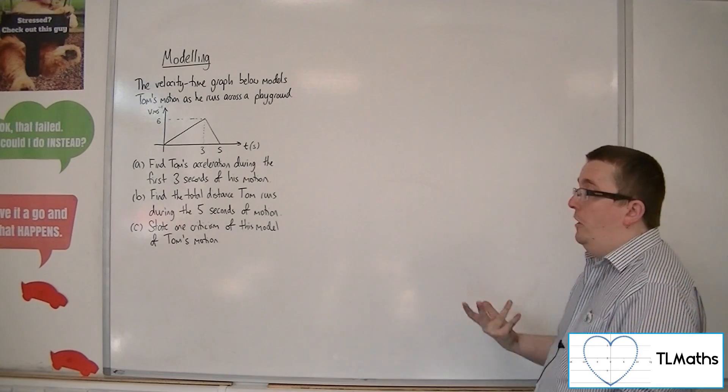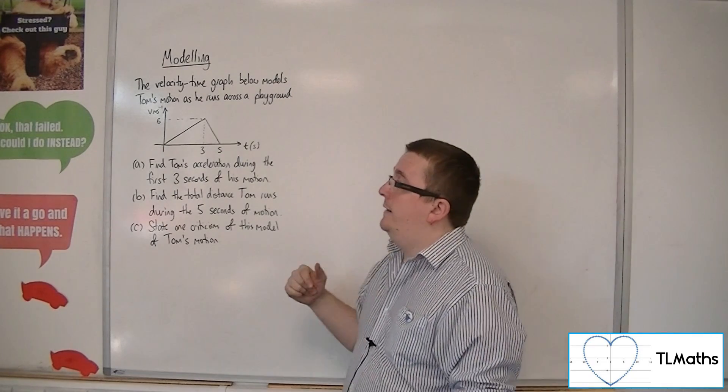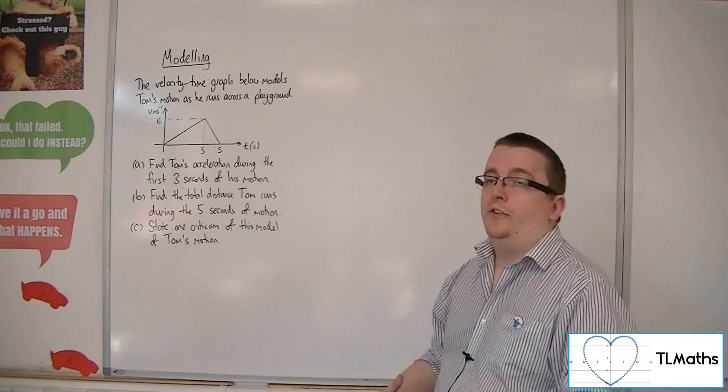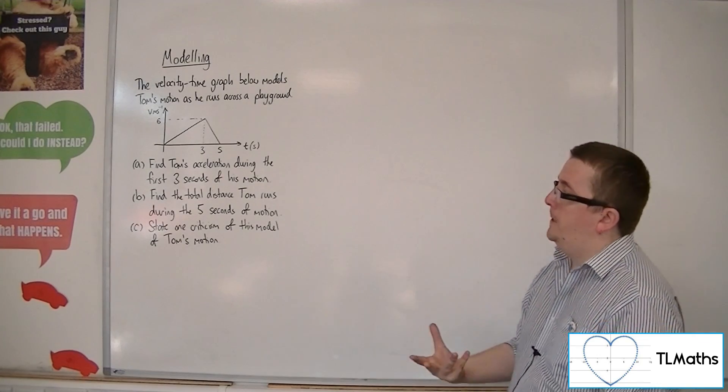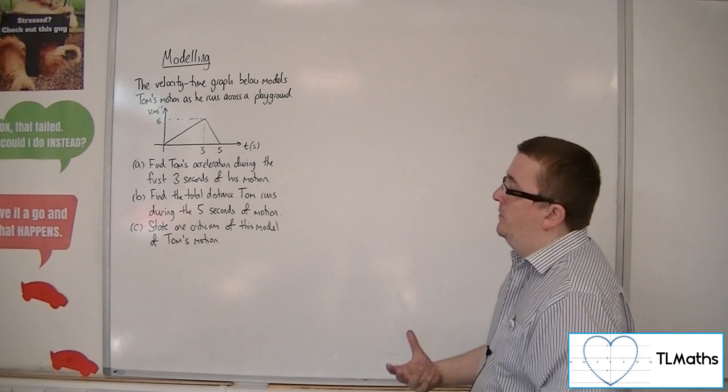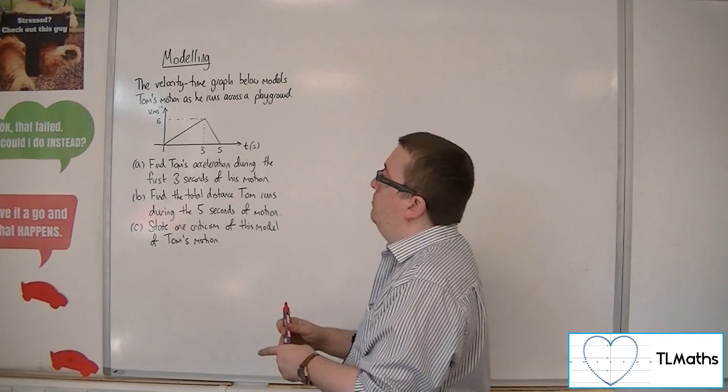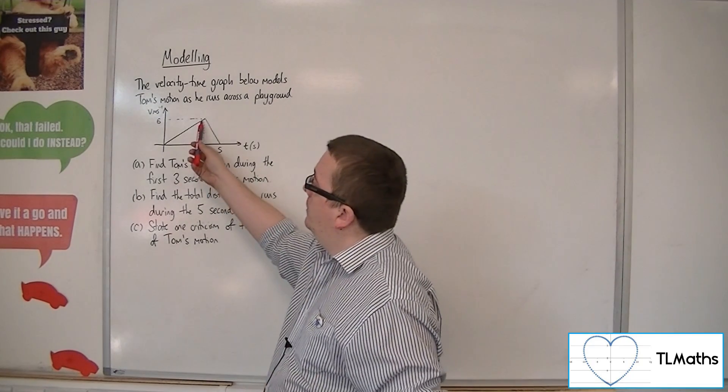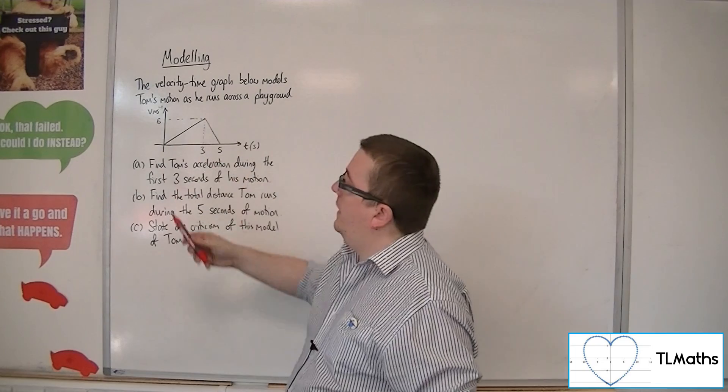Find Tom's acceleration during the first three seconds of his motion. Now acceleration, given the units that we have, will be meters per second per second. So in the first three seconds of his motion, this can be given by the gradient of that line.